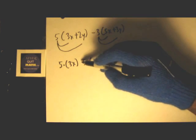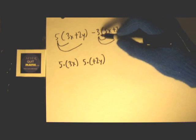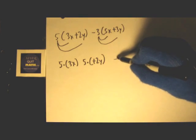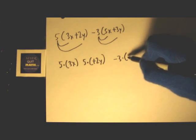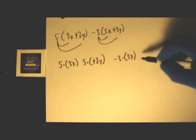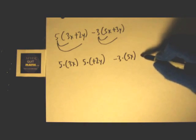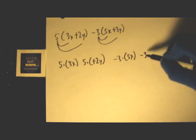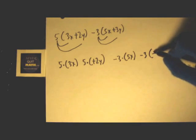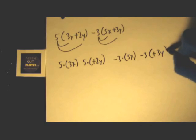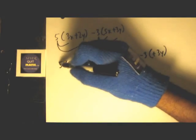This makes sure we don't multiply incorrectly. Same thing over here - we're gonna have -3 times 5X, and we're also gonna have -3 times +3Y.